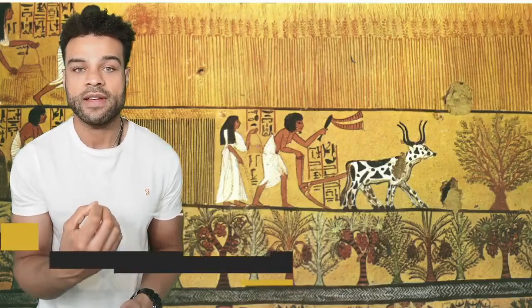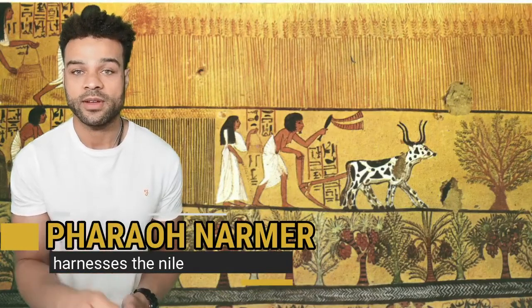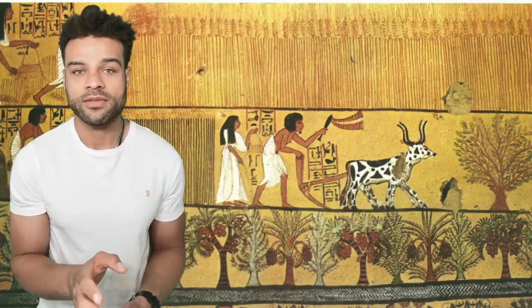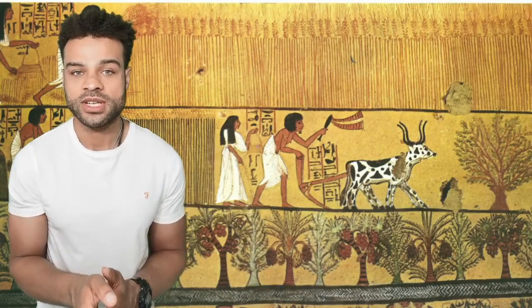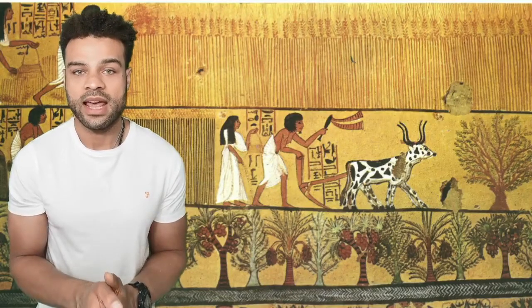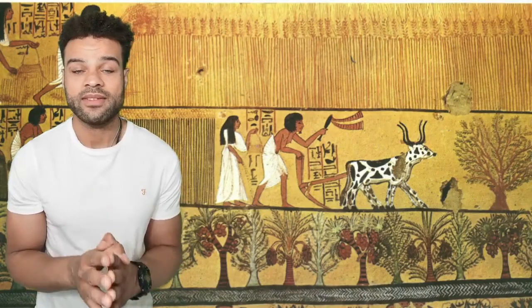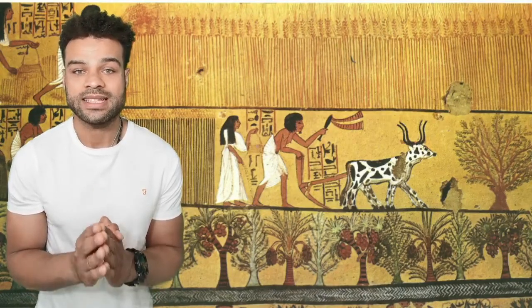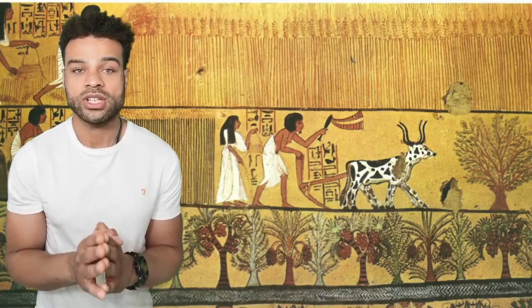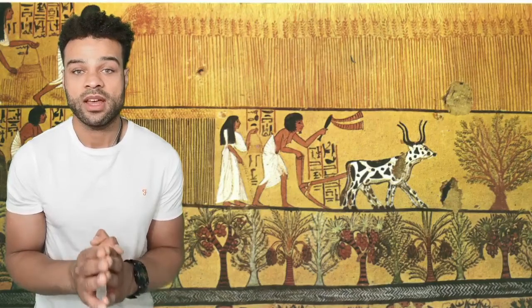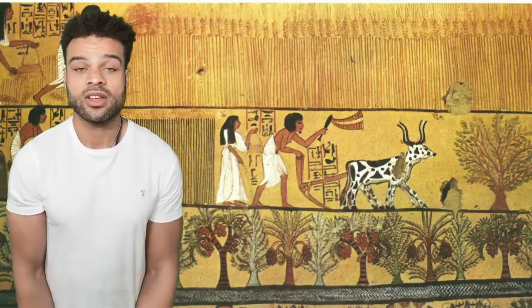Essentially, Nama saw that the flooding of the land, if controlled or harnessed, could create fertile land for farming and living. He built the banks of the river to enable water levels to drop, then diverted the river to avoid unwanted flooding. This was achieved over 7,000 years ago and set the foundations for the ancient Egyptian civilisation to thrive.